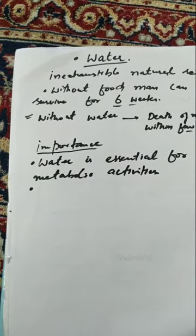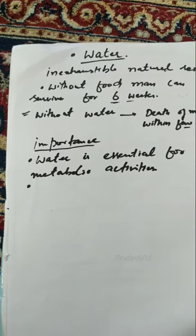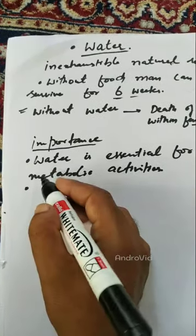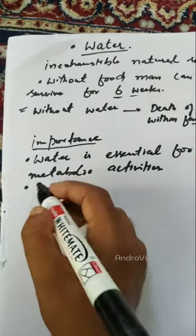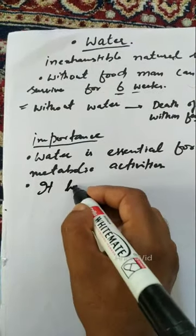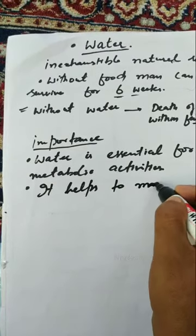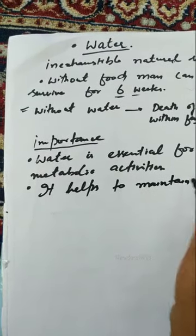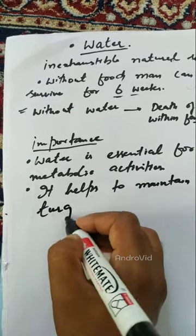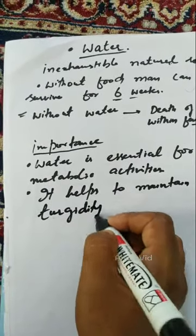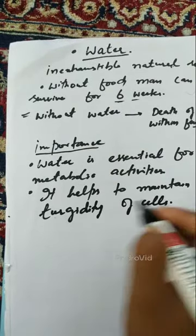The second point is that water maintains the shape of the cells. The shape of the cells is described as turgid. So water helps to maintain the turgidity of cells. This is the second most important role of water.